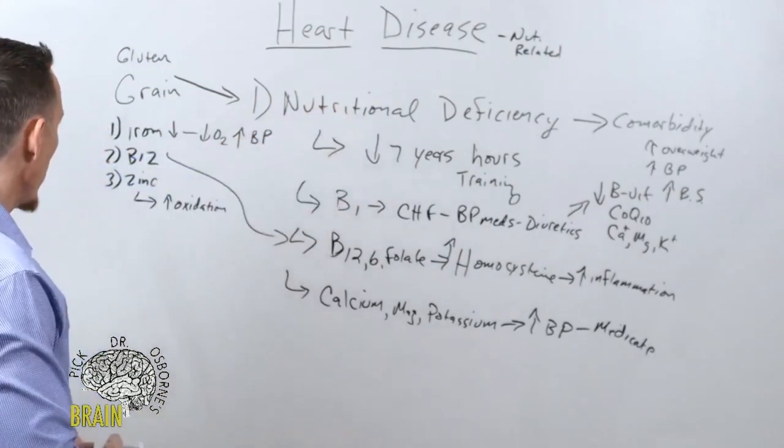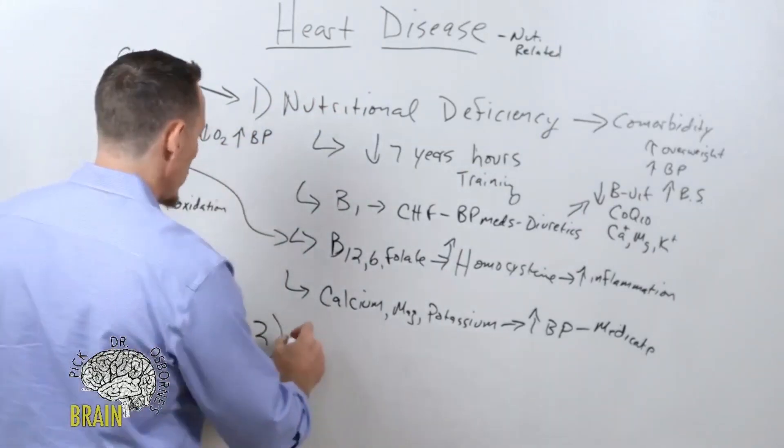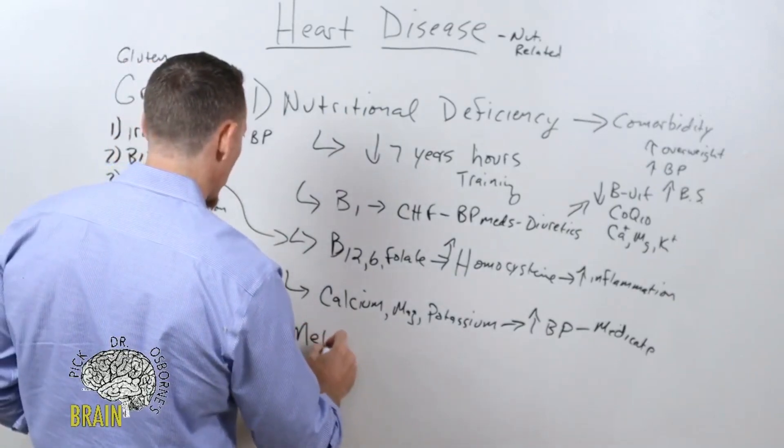Another thing gluten and grain can contribute to, number two, is something called metabolic syndrome.